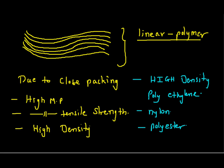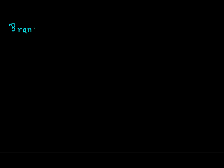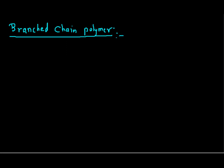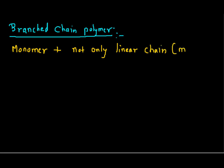So this is all about linear polymer. Next, we will move to the second category, and that is branch chain polymer. In the case of branch chain polymer, the monomer units combine together to form not only a linear chain — that is the main chain — but along with this linear main chain, it also forms side chains.